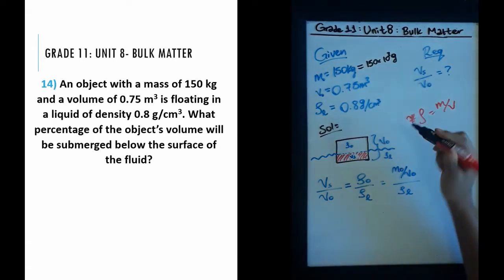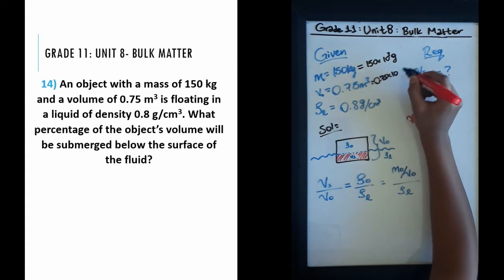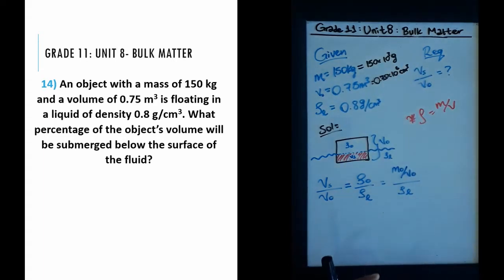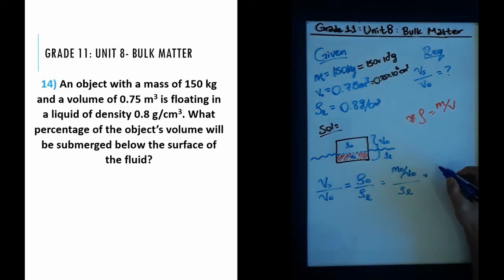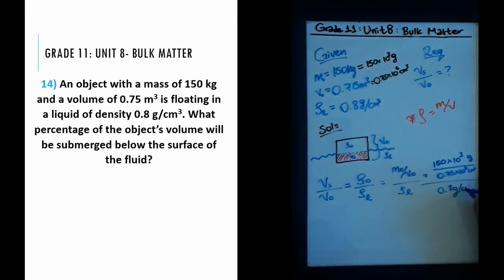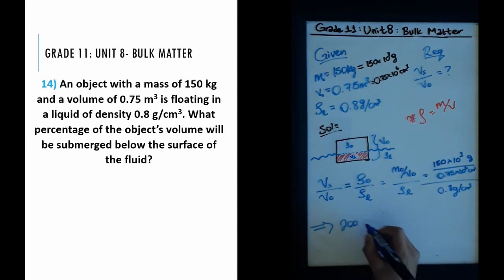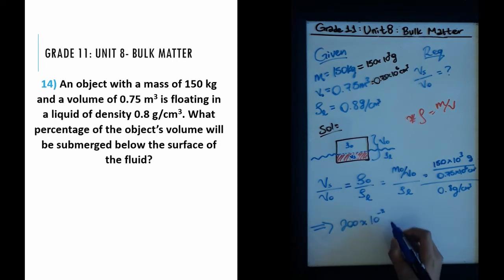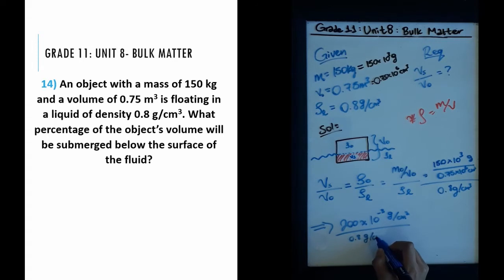To convert kg to grams, multiply by 10³. To convert meters cubed to centimeters cubed, multiply by 10⁶. Plugging in: the numerator is 150 × 10³ grams divided by 0.75 × 10⁶ centimeters cubed, and the whole thing is divided by the density of the liquid, 0.8 grams per centimeter cubed. Dividing 150 by 0.75 gives 200, multiplied by 10³ over 10⁶, giving 200 × 10⁻³.